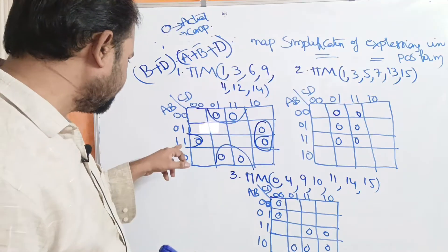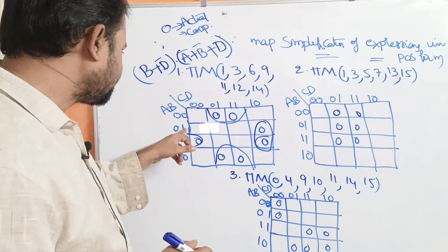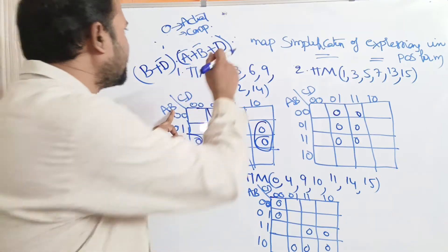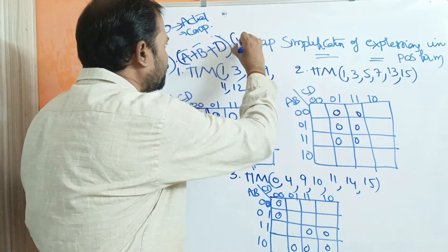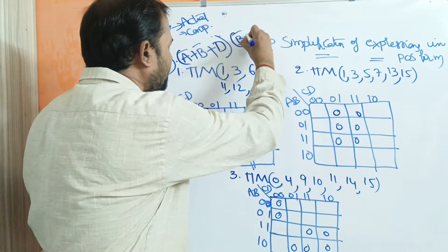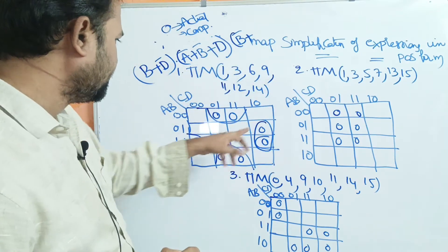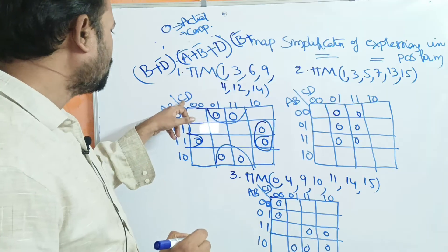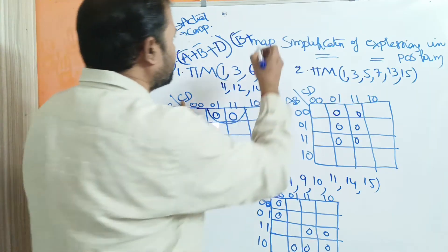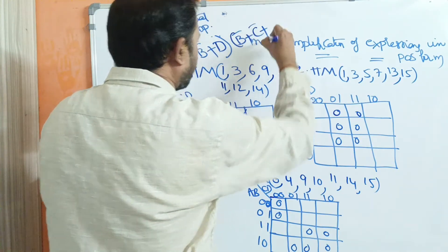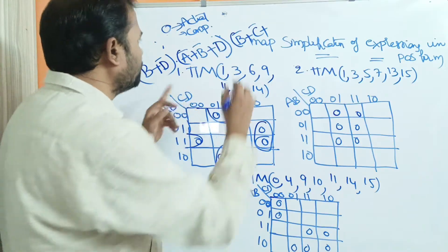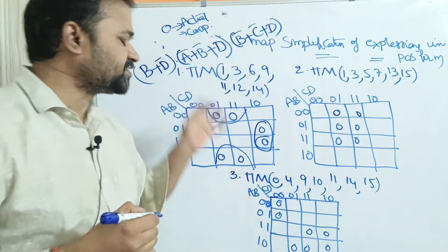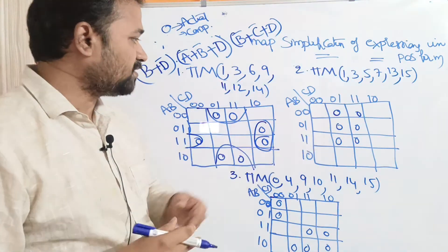If we observe these two cells, 0111, the second one is common. The second one is B. One means complement of the variable, so we write B̄. Then observing this cell with value 10: one means complement, so C̄, and zero means actual variable, giving D. This completes the simplified expression for the first problem.